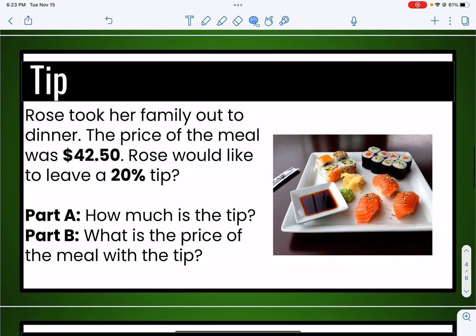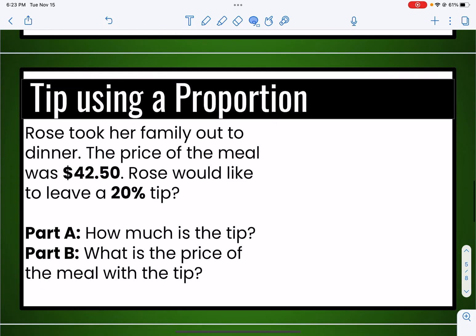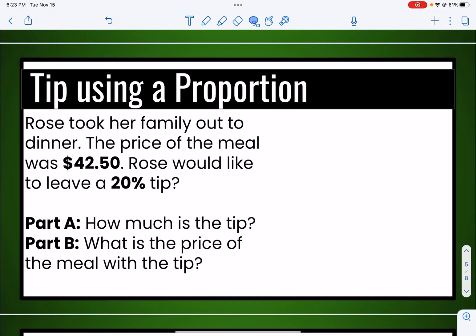So this particular problem that we're working on today says, Rose took her family out to dinner. The price of the meal was $42.50. Rose would like to leave a 20% tip. And part A says, how much is the tip? And part B says, what is the price of the meal with the tip? Now I'm going to get rid of the picture there so that we can focus in on the math.